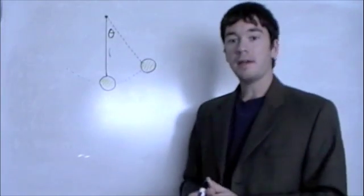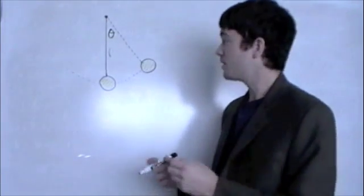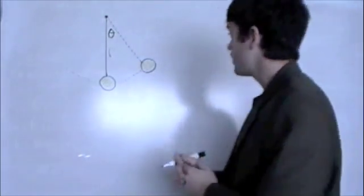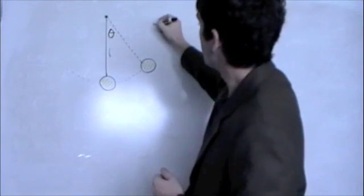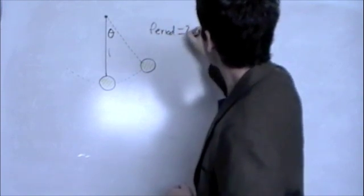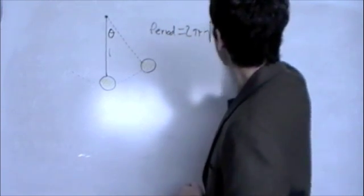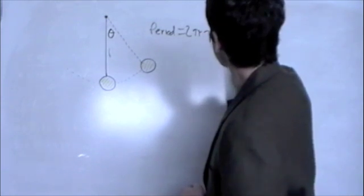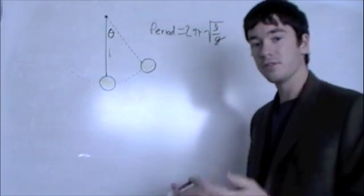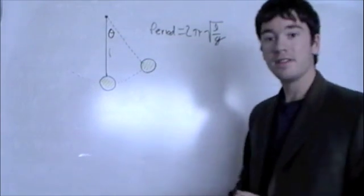And we can mathematically describe things about this pendulum based on these properties. Like, let's say we want to know the period of the pendulum, and the period is how long it takes for it to complete one swing, one cycle. We can describe the period by the period equals 2 pi times the square root of the length of the string over g, the force of gravity. Now, if you'll notice, mass is nowhere in this equation.